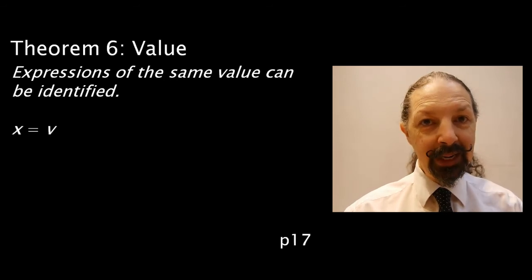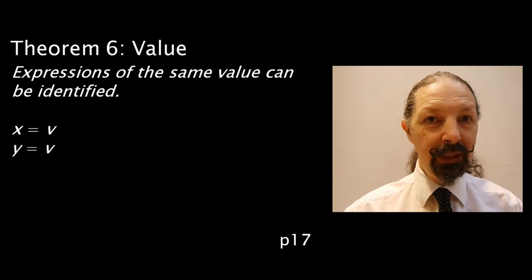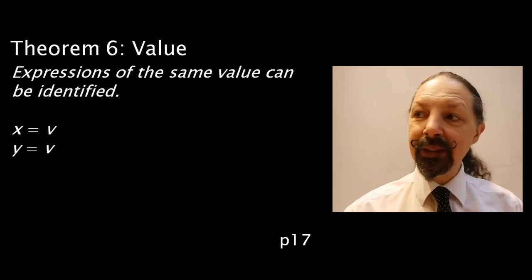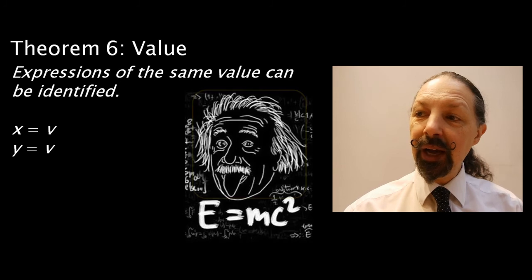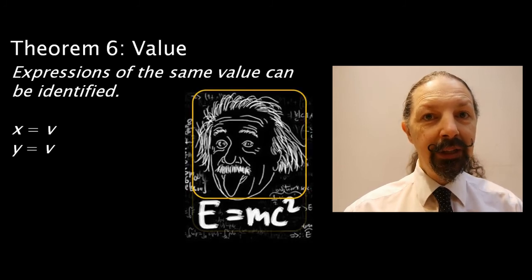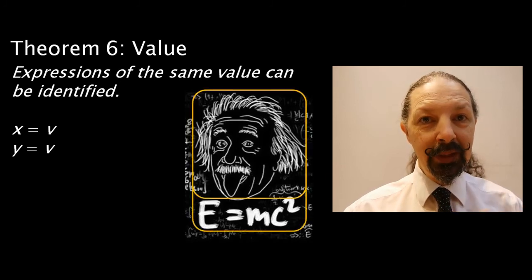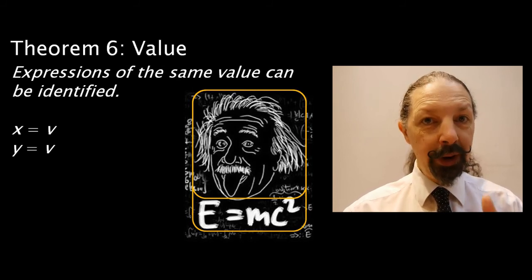This is saying that x equals v and y equals v can be stated. This is the same as saying that Albert Einstein and the person who came up with the formula e equals mc squared are one and the same.